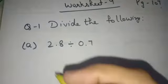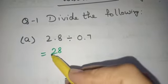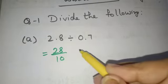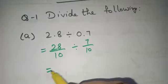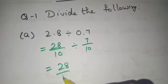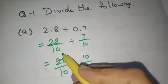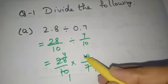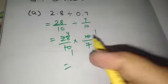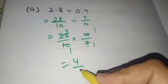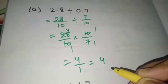Both numbers are in decimal. As we have just discussed, if the divisor is in decimal form, convert into fractions. 28 by 10 divides 7 by 10. Then the division sign will be converted to multiplication. After this cancellation, 7 ones are 7, 10 ones are 10. Here 4 ones are 4 by 1 ones are 1. We can leave this 1 and the answer will be 4.